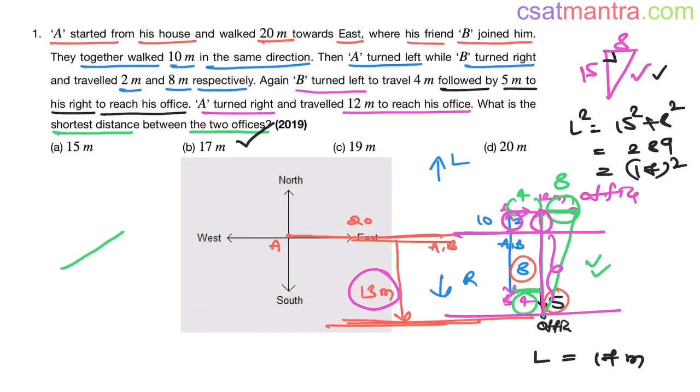So our answer is B. Very easy problem. In directions, always fix the center first. Once we have these directions, always fix the center and start from the center. And then just follow the directions and make use of right angle triangle Pythagoras theorem.